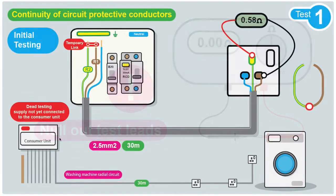So how do we confirm that the CPC which starts in the consumer unit reaches this socket, this socket, and this socket? If you look a bit closer, this is the CPC in the consumer unit.